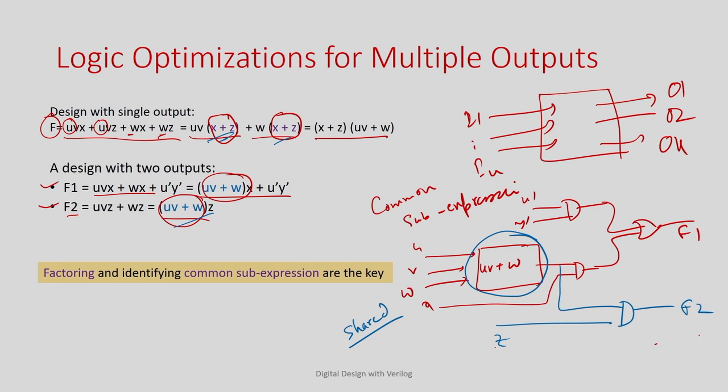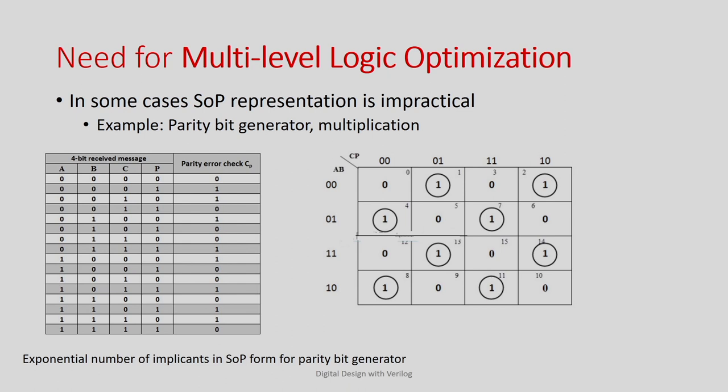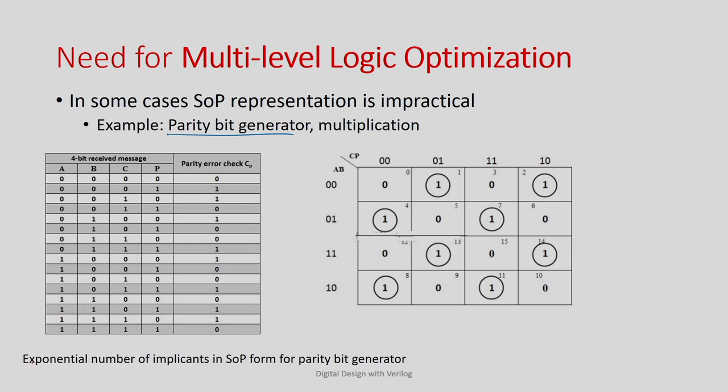We need a systematic process to do this factoring. We will discuss how to do multilevel optimization in today's class and the next. To further motivate multilevel optimization, consider the parity bit generator example — here you will see that multilevel logic gives a much simpler expression.